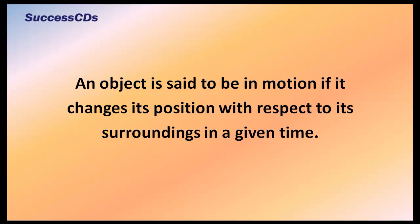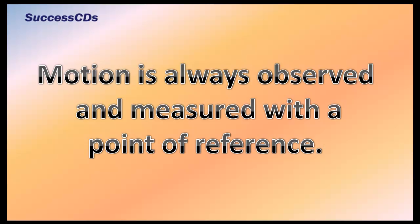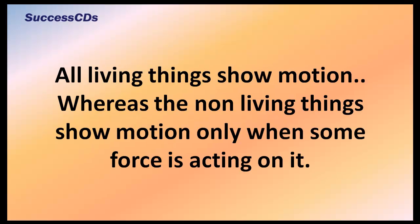The window in the car cabin is at rest — that is, its position with respect to the walls of the cabin does not change with respect to surroundings. Motion is always observed and measured with a point of reference. All living things show motion, whereas non-living things show motion only when some force is acting on them.